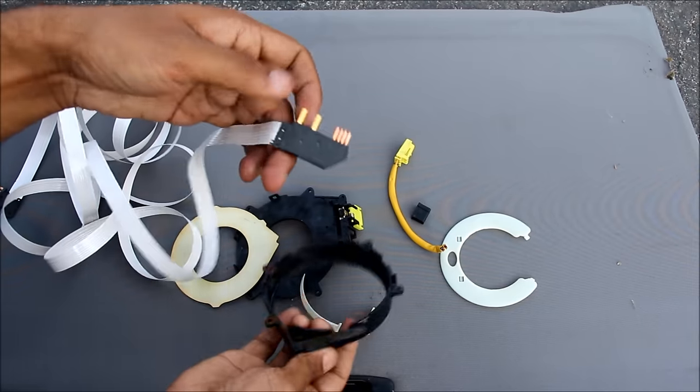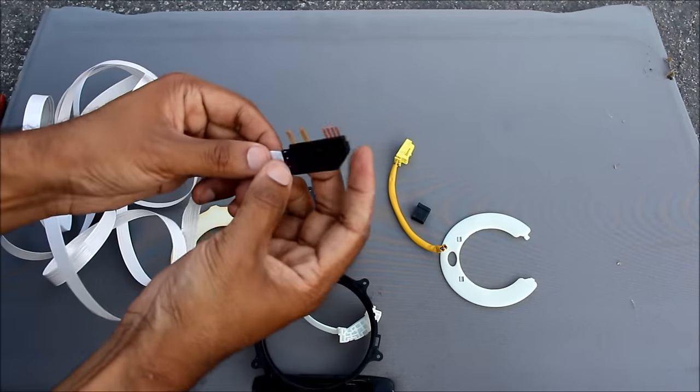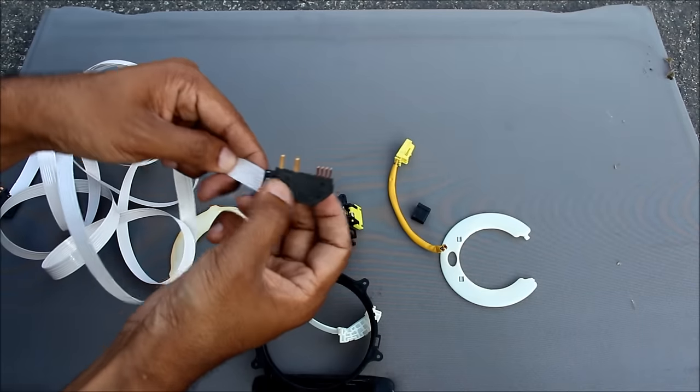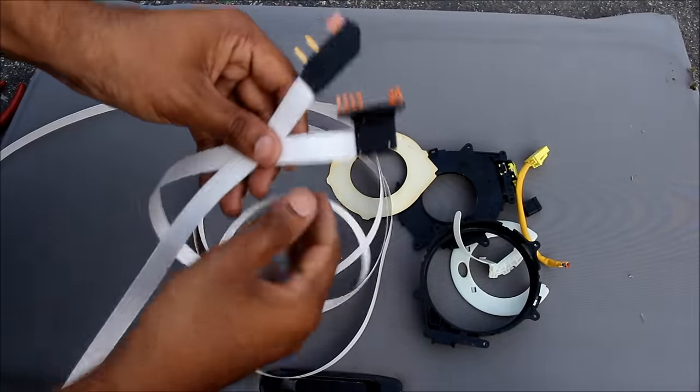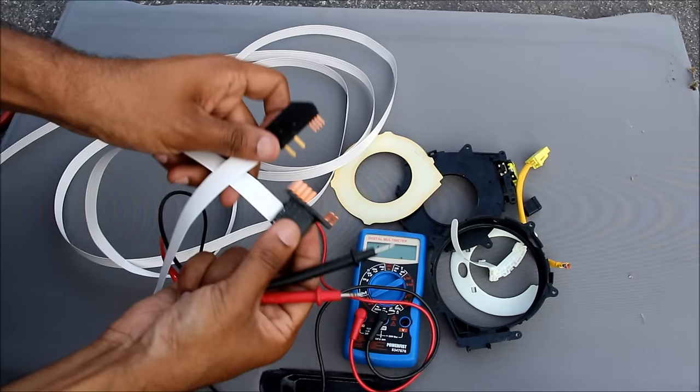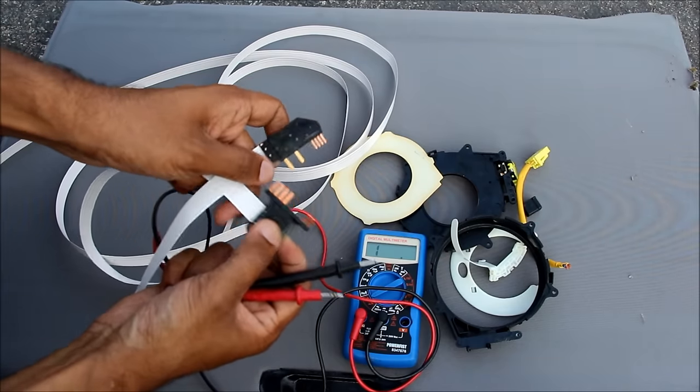I'm going to remove the contacts from the outside of the clock spring. And again you can see this is where the ribbon cable joins to the plugs. Now if you were to stretch out this ribbon cable it's roughly double my height, which is about 12 feet long.